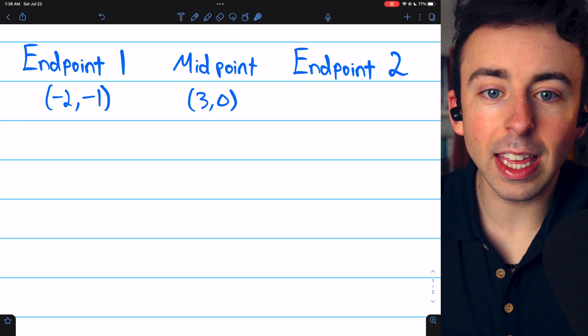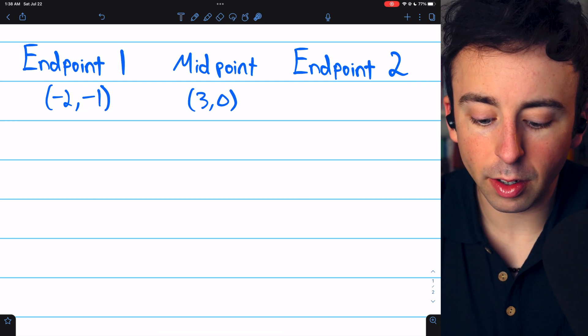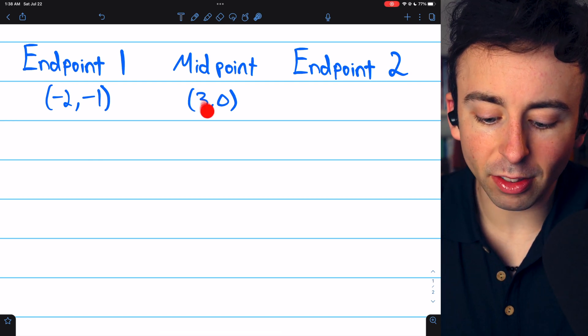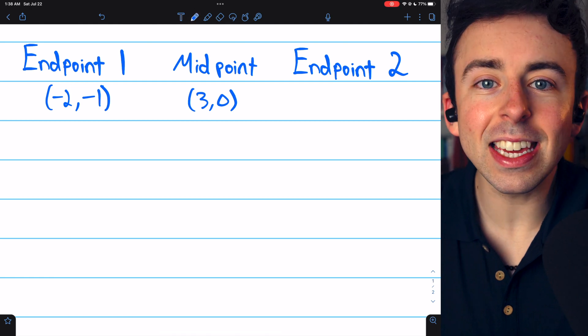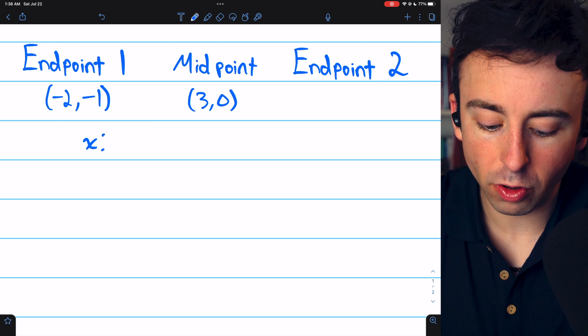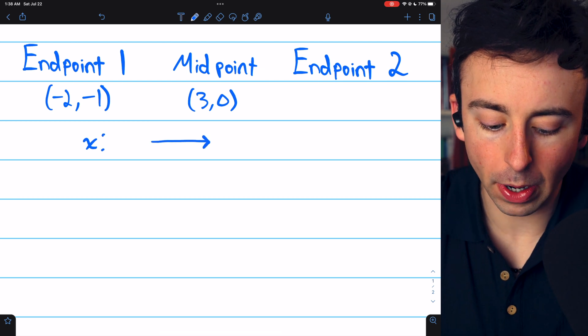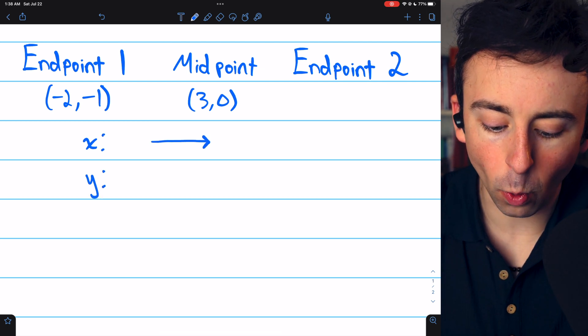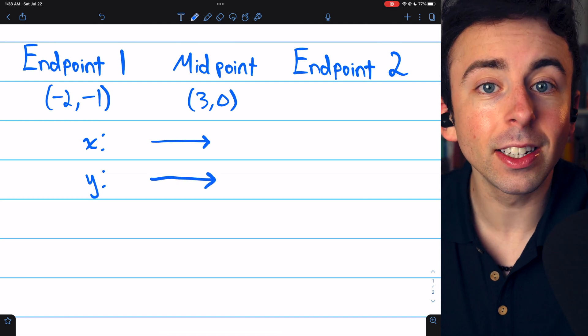In this example, we're given the endpoint (-2, -1), and the midpoint is (3, 0). To find the other endpoint, we have to ask how much did the x-coordinate change from one endpoint to the midpoint, and how much did the y-coordinate change from one endpoint to the midpoint?